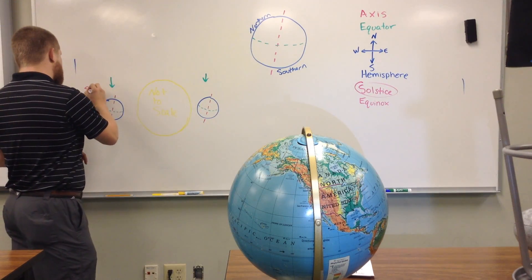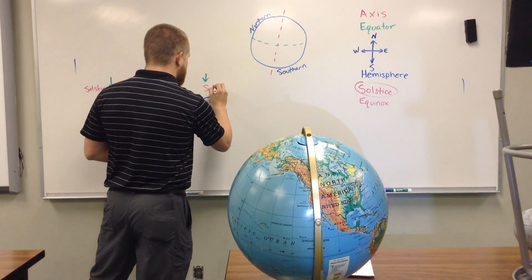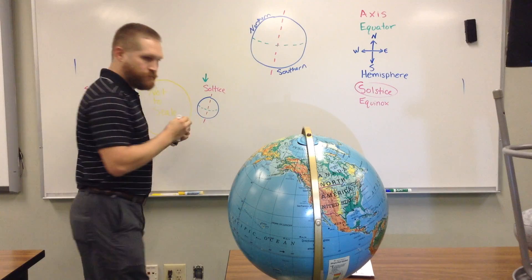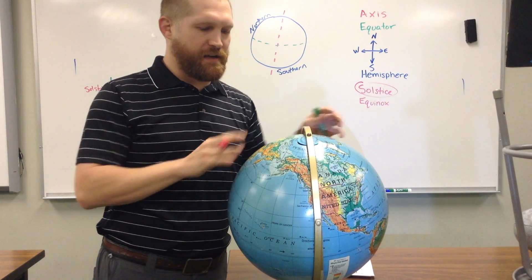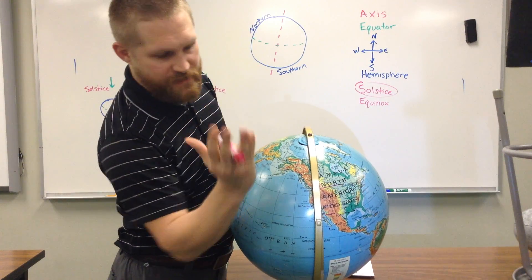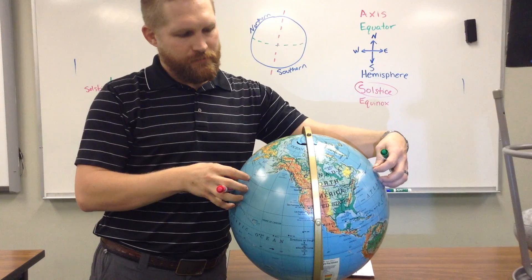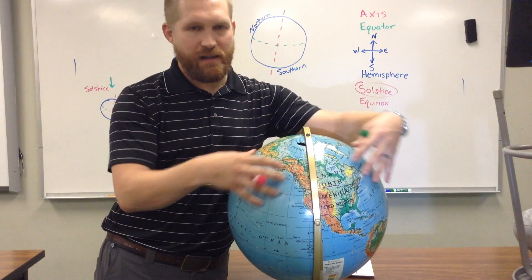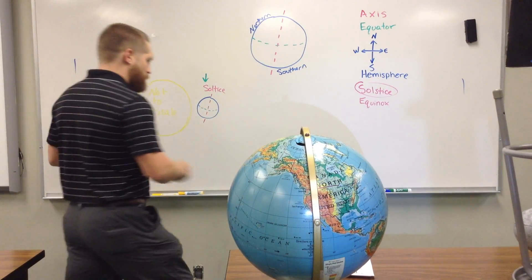That means one half of the earth is going to have the longest day of the year. So, right here, when the earth is at its maximum orbit around the sun and it's facing as much towards the sun as it will, the northern hemisphere is going to have its longest day, and the southern hemisphere is going to have its shortest day, most amount of light, least amount of light.